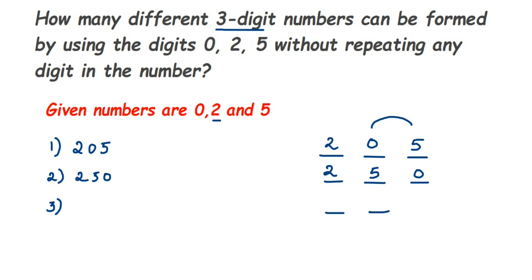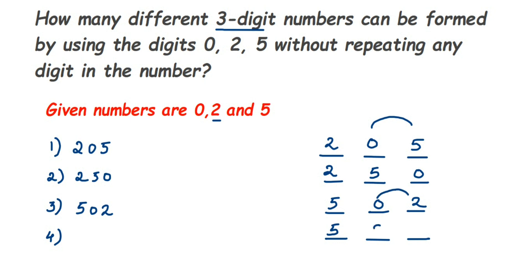Now I'll start with 5. Fixing 5 in the hundreds place, the next digit can be 0 and then 2, giving 502. For the last number, I keep 5 fixed and interchange 0 and 2, so 2 comes next and then 0 — giving 520.